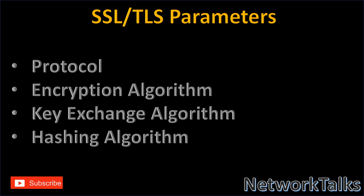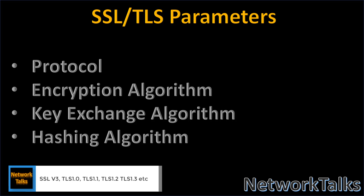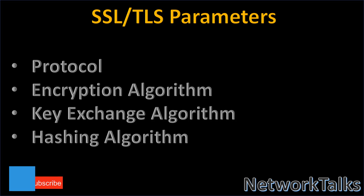We will see some of the important SSL and TLS parameters which get negotiated during the SSL handshake process. These parameters include the protocol, the encryption algorithm, key exchange algorithm, and hashing algorithm. The protocol refers to the SSL and TLS version — SSL version 1, 2, 3, TLS 1.0, 1.1, TLS 1.2, and the newest version, TLS 1.3.